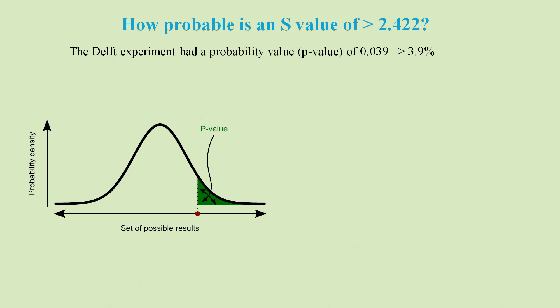The Delft experiment had a probability value, or p-value, of 0.039, which means 3.9%. A small p-value is considered to be strong evidence against the null hypothesis that the experiment is ruled by a local realist model.